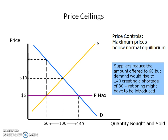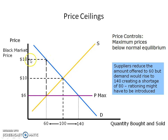What we'll find is that at 60 units and a price of $6, this is how many would be supplied. But at 60 units, this is how many people are actually demanding the product, and this is the price they're willing to pay, which is $18. So typically what will happen is you'll see a black market be created that will increase the price from $6 to $18.